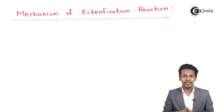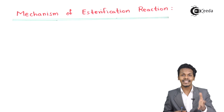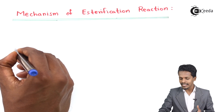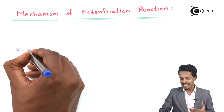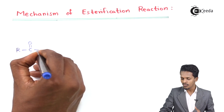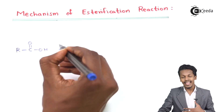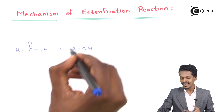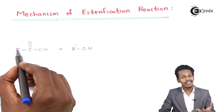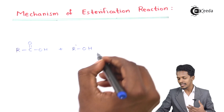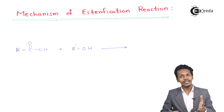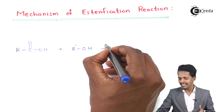Before understanding the mechanism of the esterification reaction, let us understand the general reaction. The esterification reaction is the reaction of carboxylic acid, that is RC(=O)OH, with an alcohol, R'OH, where the alkyl group R' can be different from R.